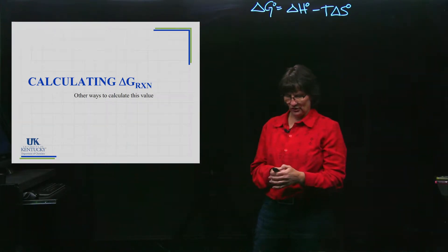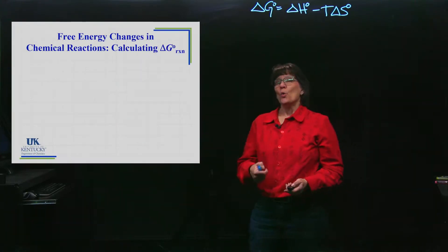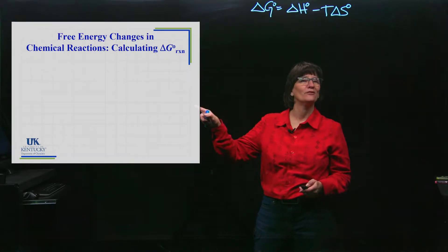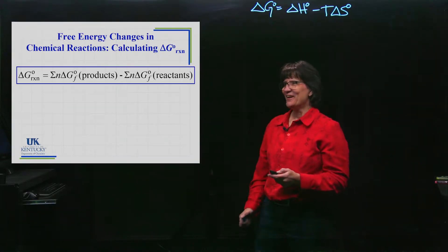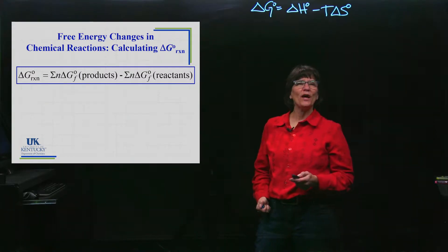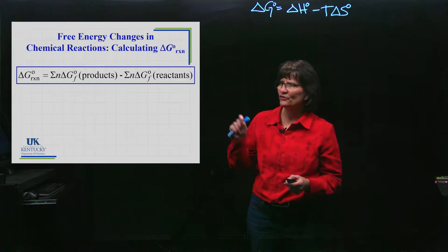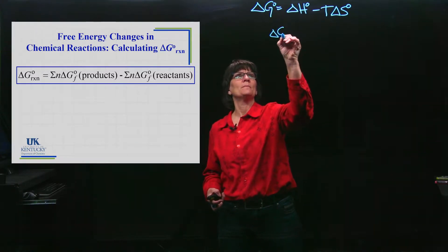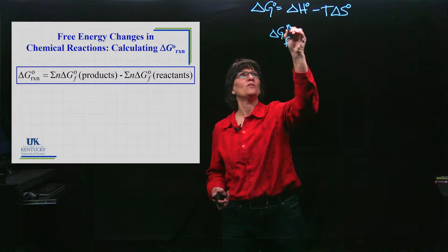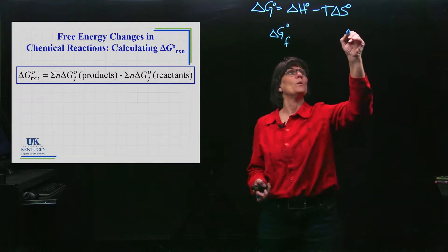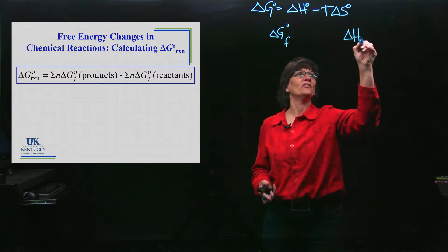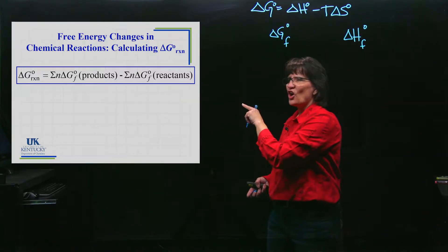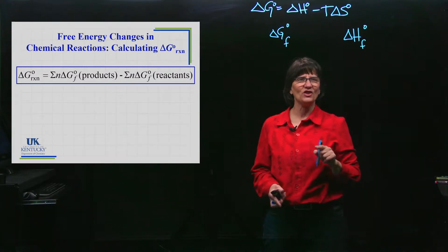We're going to use this equation, and this equation has symbols we've been familiar with before. We see Delta G, we see a little F, and we see a circle. We haven't seen this exactly, but we did see this before when we used an equation just like this. We could replace all the G's with H's, and that was a way to calculate the Delta H of a reaction if we went to tables with Delta H formation values.